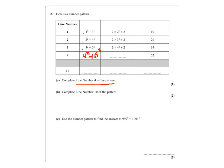And looking at pattern number 3 you've got 2 times 4 squared always 1 extra so it will be 2 times 5 squared plus 2 and 5 squared is 25, 25 times 2 is 50 plus 2 is 52.